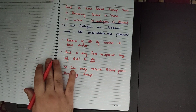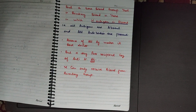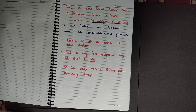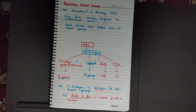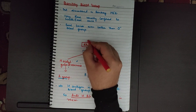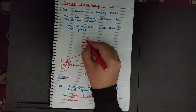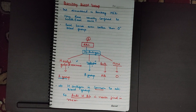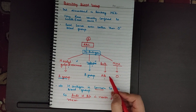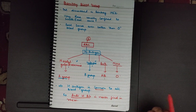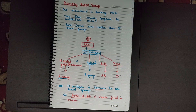Now we come to the interesting case — the Bombay blood group. What is special about it? In the Bombay blood group, the H antigen is also absent. Since H antigen is the precursor, if H antigen is not present, neither A nor B nor AB will be present, and O will also be absent. If H is absent, everything is absent.